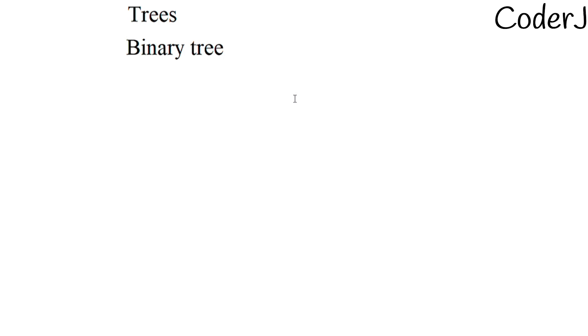Binary tree is the very root of this concept. If you get a solid hold on it, you'll be able to solve a lot more questions. Before we start, we must know what a tree is. In simple words, a tree is a non-linear data structure in which we can store information in hierarchical order — similar to real-life trees which have different levels like roots, trunks, branches, and leaves.